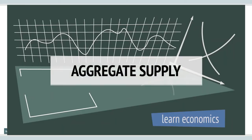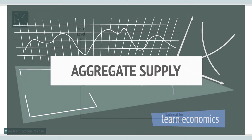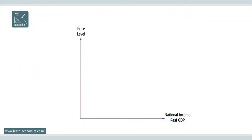Aggregate supply is the sum of goods and services an economy is willing and able to produce in a period of time. In the short run, the aggregate supply curve — AS curve for short — slopes upwards. Let's see why.